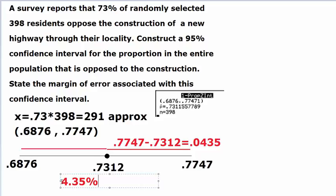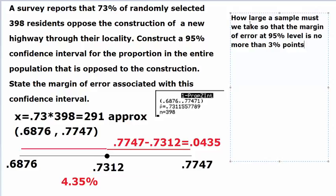Now, let's handle a subsequent question. The next question that we are taking up is, how large a sample must we take, so that the margin of error at 95% level is no more than 3 percentage points.